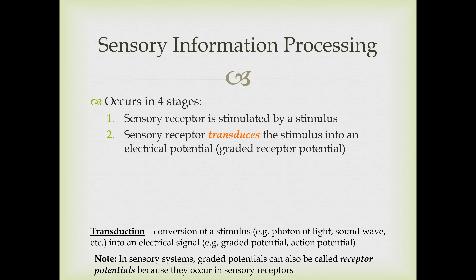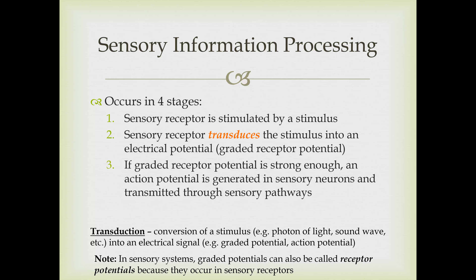As a quick review, a graded potential is a change in resting membrane potential—either in the positive direction (depolarization) or negative direction (hyperpolarization). If that graded receptor potential is strong enough and meets threshold, we get an action potential generated in the sensory neurons. That action potential is propagated through the sensory pathways to the central nervous system, where it is integrated and processed. Those are the four steps of sensory information processing.